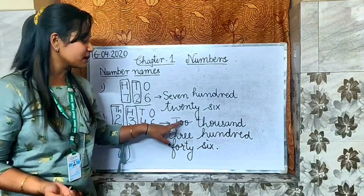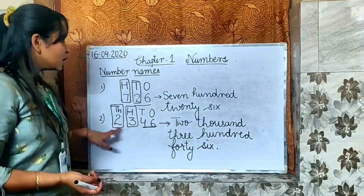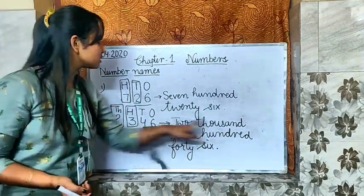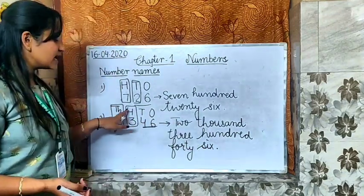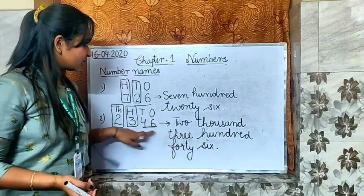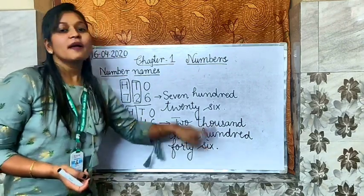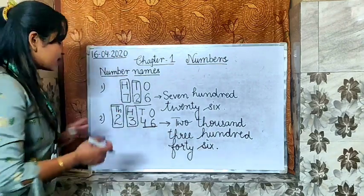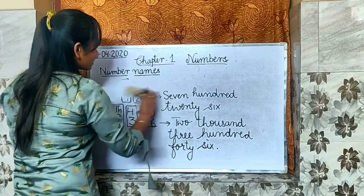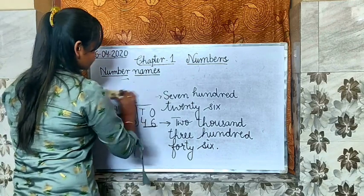So let's read the number name again: two thousand three hundred and forty-six. So our number name for 6432 goes like this. Let's go to one more example.